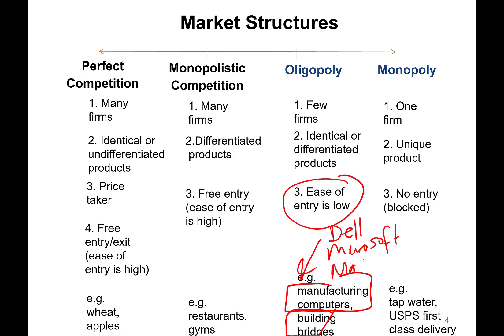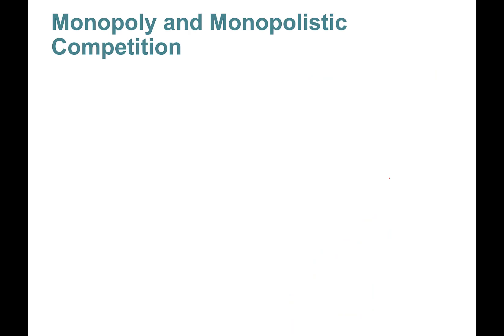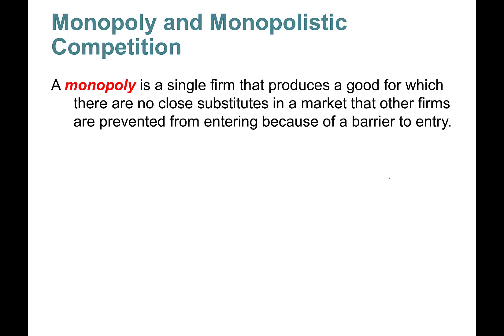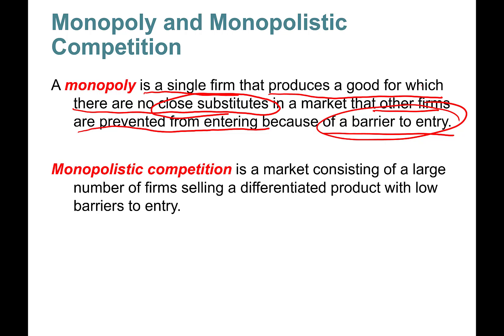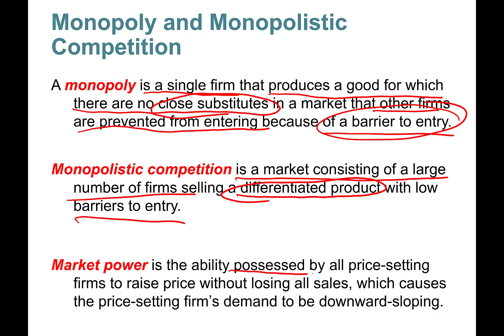Computer manufacturers like Dell and Apple dominate the market — just a couple of companies. In this chapter we focus on monopoly and monopolistic competition, both of which have market power. A monopoly is a single firm producing a good with no close substitutes in a market where entry is blocked by a barrier. Monopolistic competition is a large number of firms selling differentiated products with low barriers to entry.